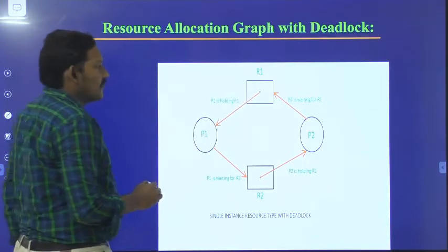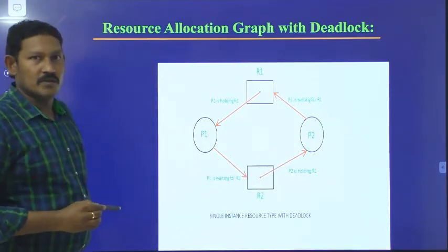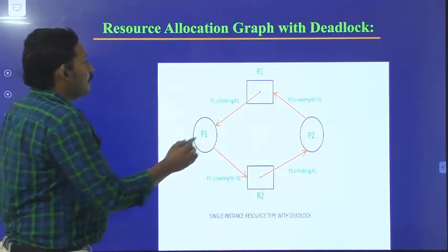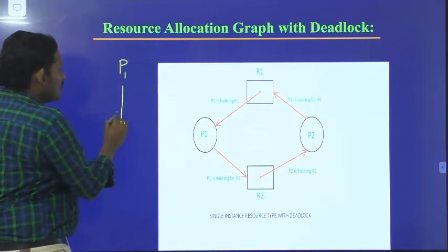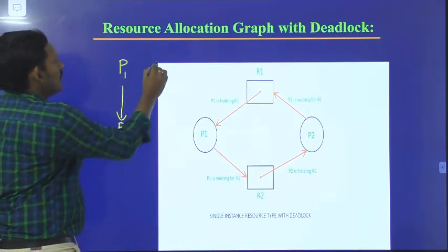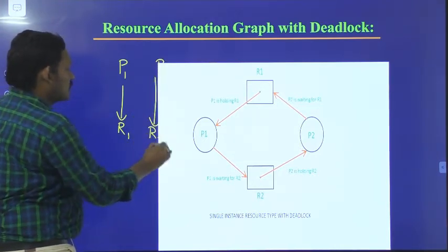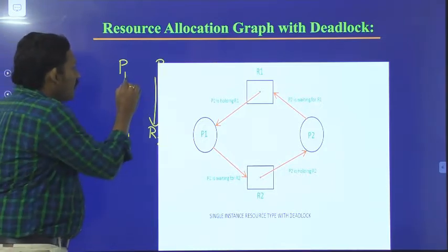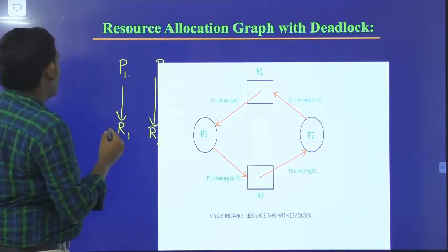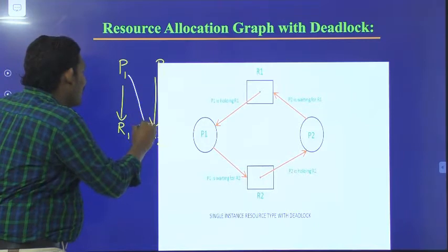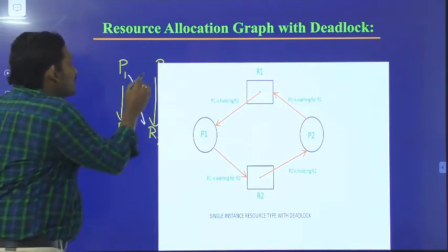Process P1 is holding resource R1, whereas process P2 is holding resource R2. Process P1 is waiting for resource R2, whereas process P2 is waiting for resource R1.